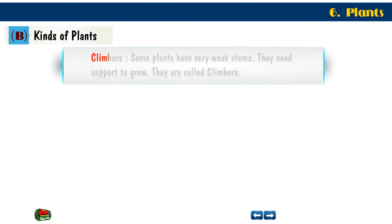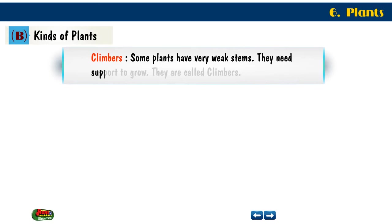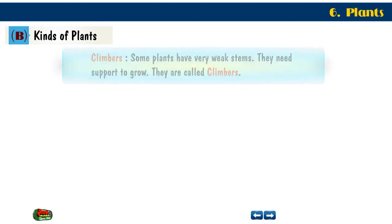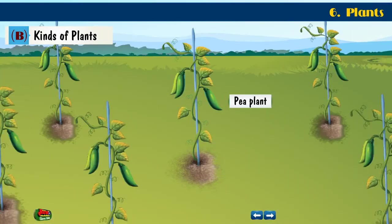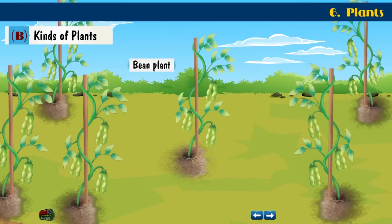Climbers. Some plants have very weak stems — they need support to grow. They are called climbers. Examples are grapevine, pea plant, and bean plant.